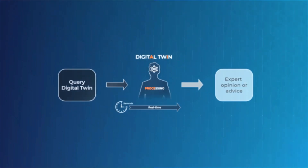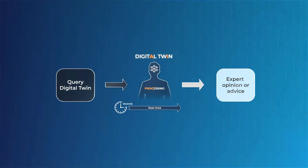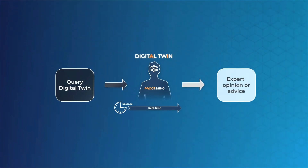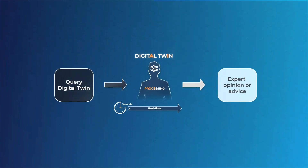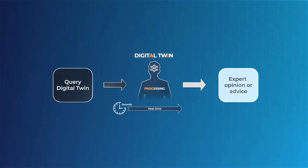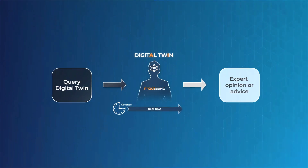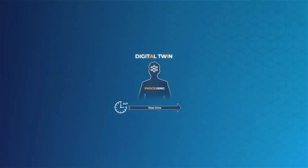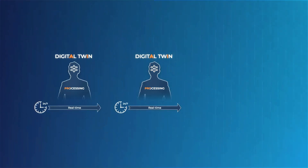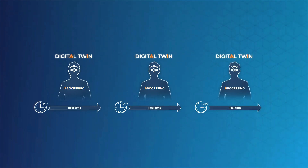TOM digital twins are integrated into existing systems via API to provide real-time human decision intelligence. Organizations deploy multiple twins into the system to access the opinions or advice of more than one human expert.